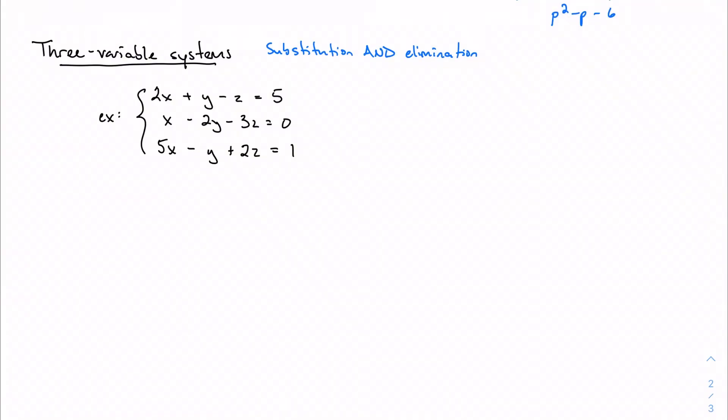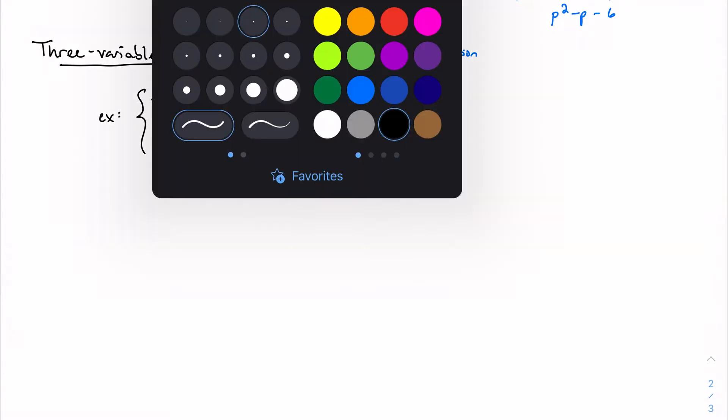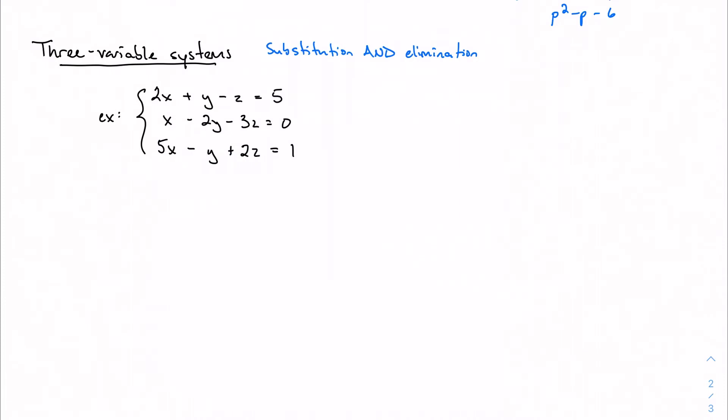Our work for three variable systems is actually very similar to our work for two variable systems, just with a little more work. We can actually do this by a mix of substitution and elimination.